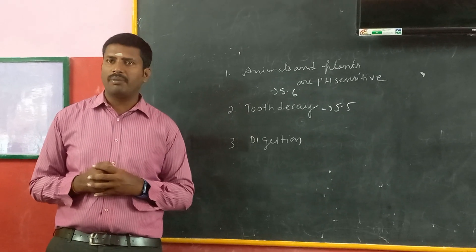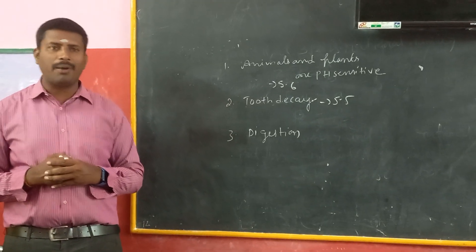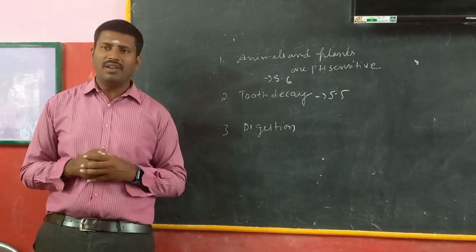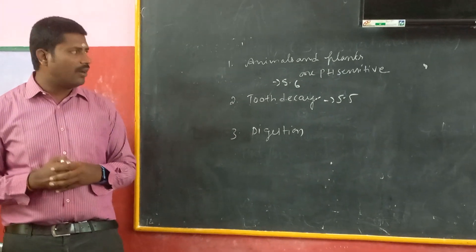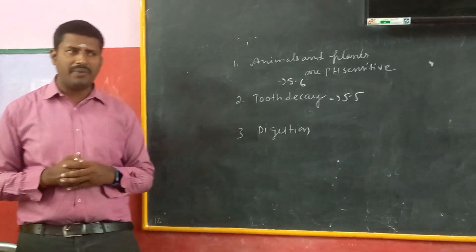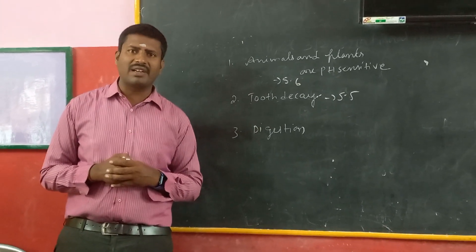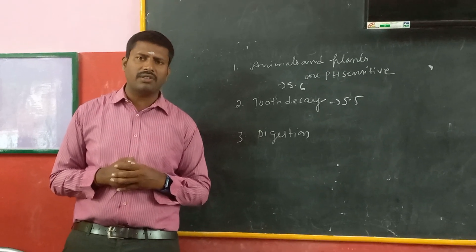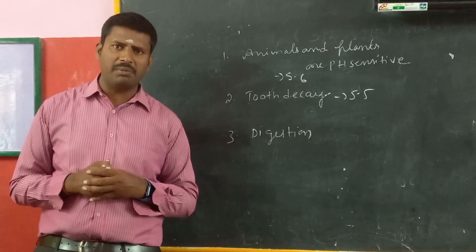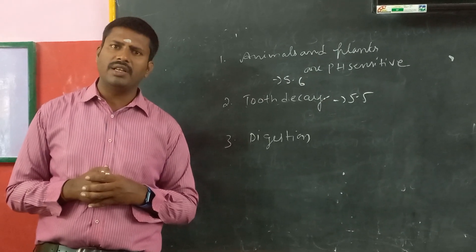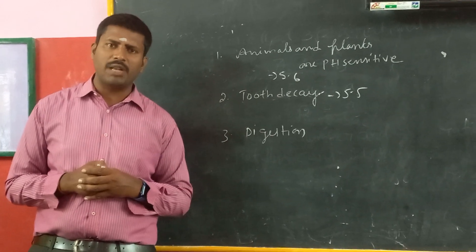pH has become part of day-to-day life. For example, normally if the pH value is less than 5.6, then we will get acid rain. When we get acid rain, it directly goes into the rivers, lakes and ponds, and it is going to destroy the aquatic animals. The life of aquatic animals will be disturbed.